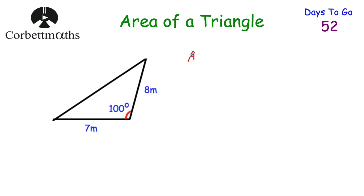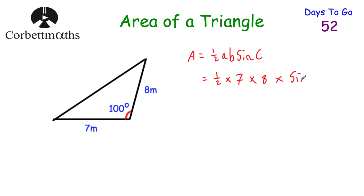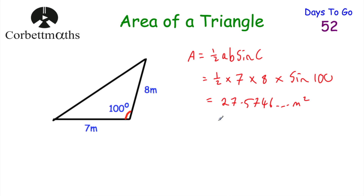To find the area of the triangle, we do area equals a half AB sine C. Substituting in our values: a half, multiplied by A (which is 7), multiplied by B (which is 8), multiplied by the sine of 100. Doing a half times 7 times 8 times sine of 100 gives us 27.5746... metres squared. Remember our units — because we're dealing with metres, it's metres squared. Rounding to one decimal place, that's 27.6 metres squared. Well done if you got that!